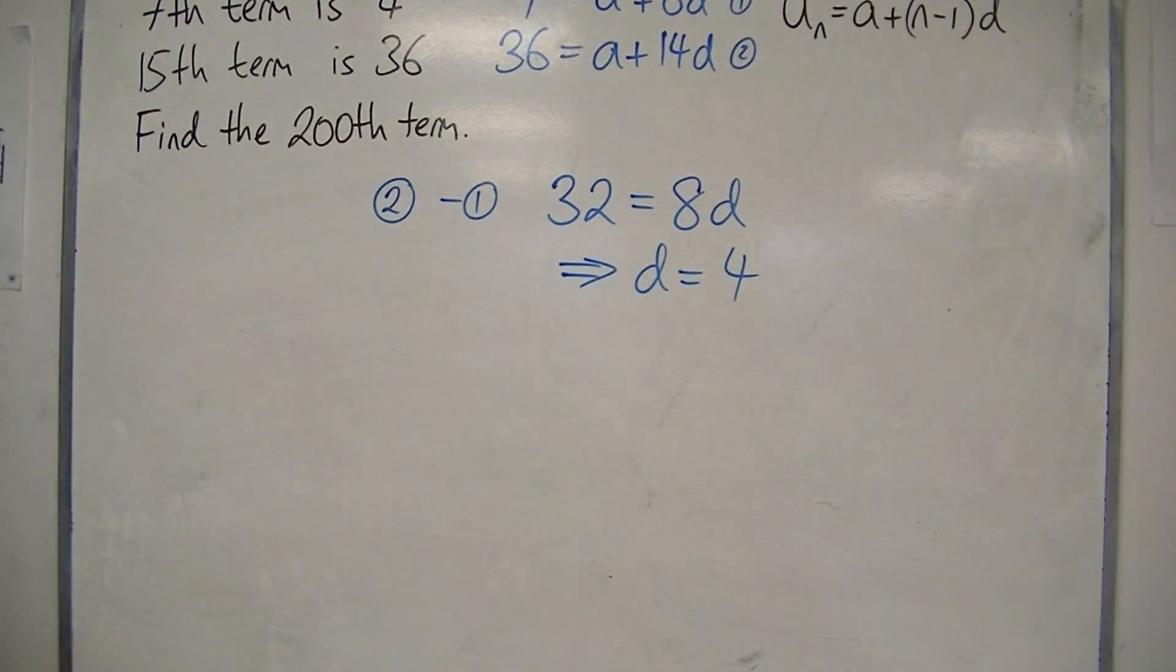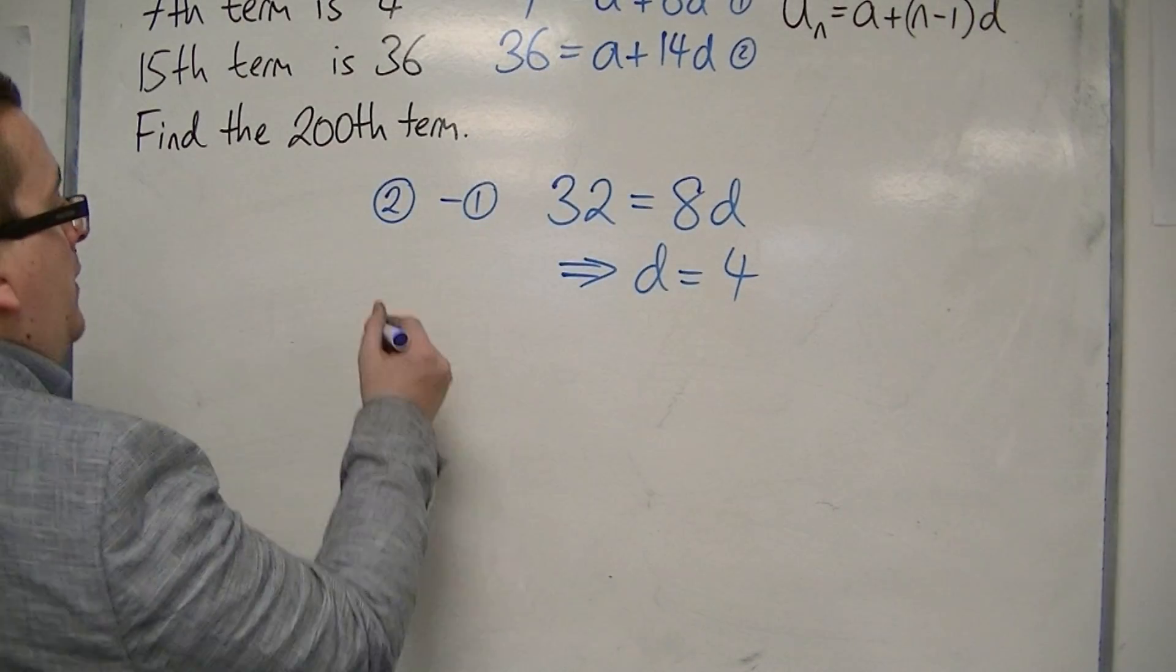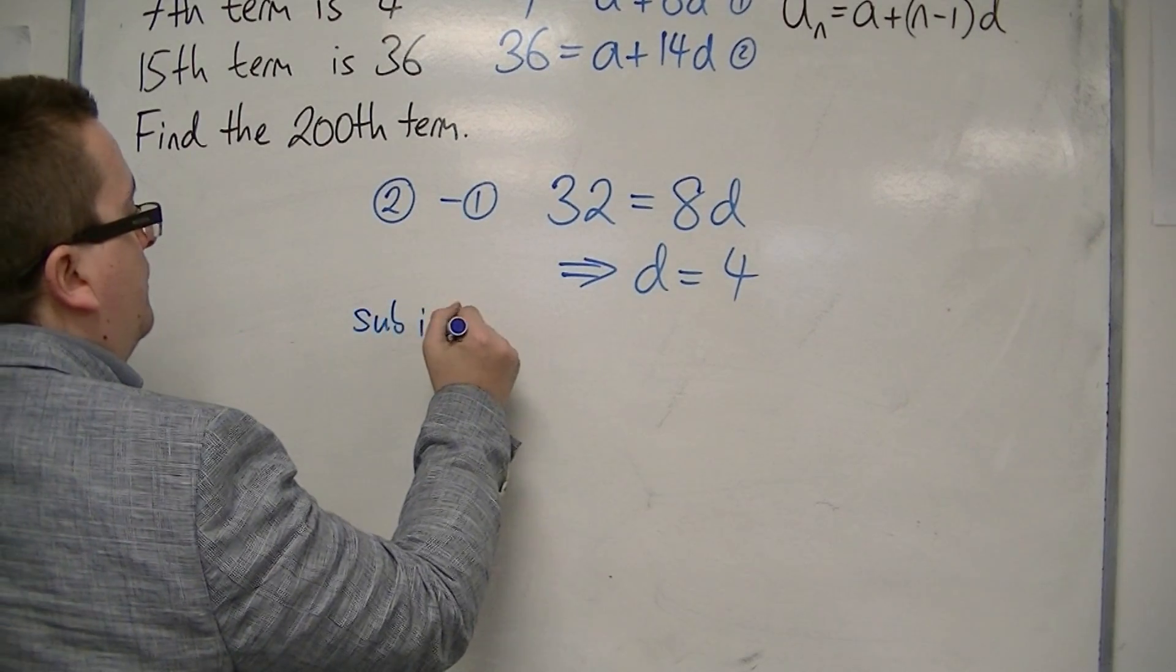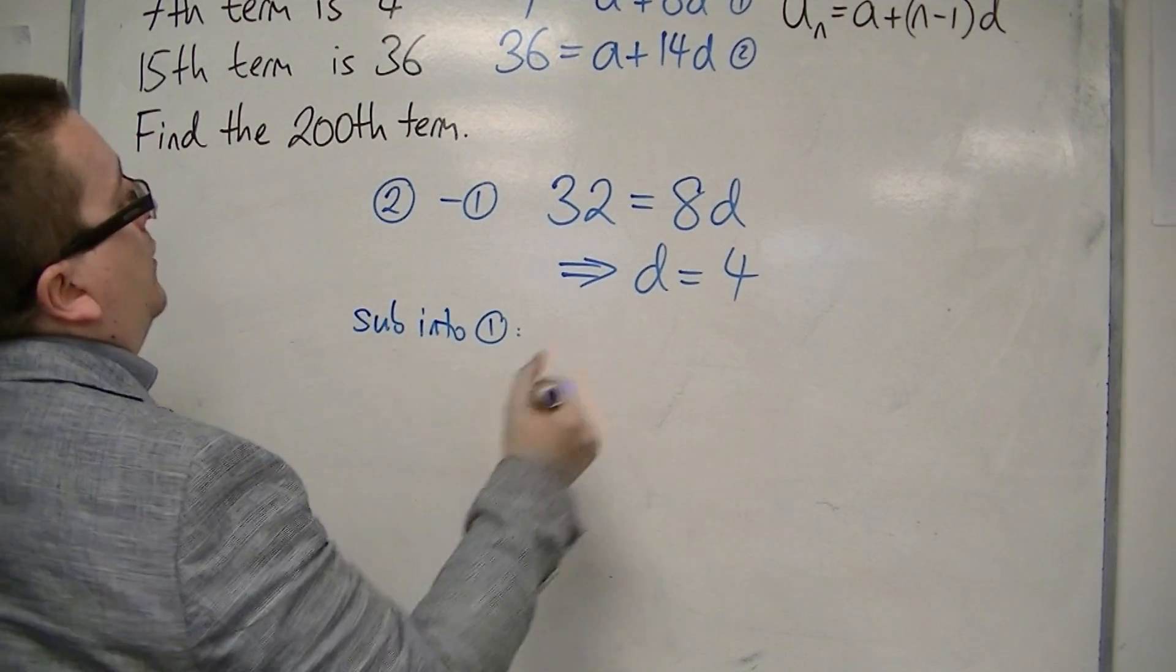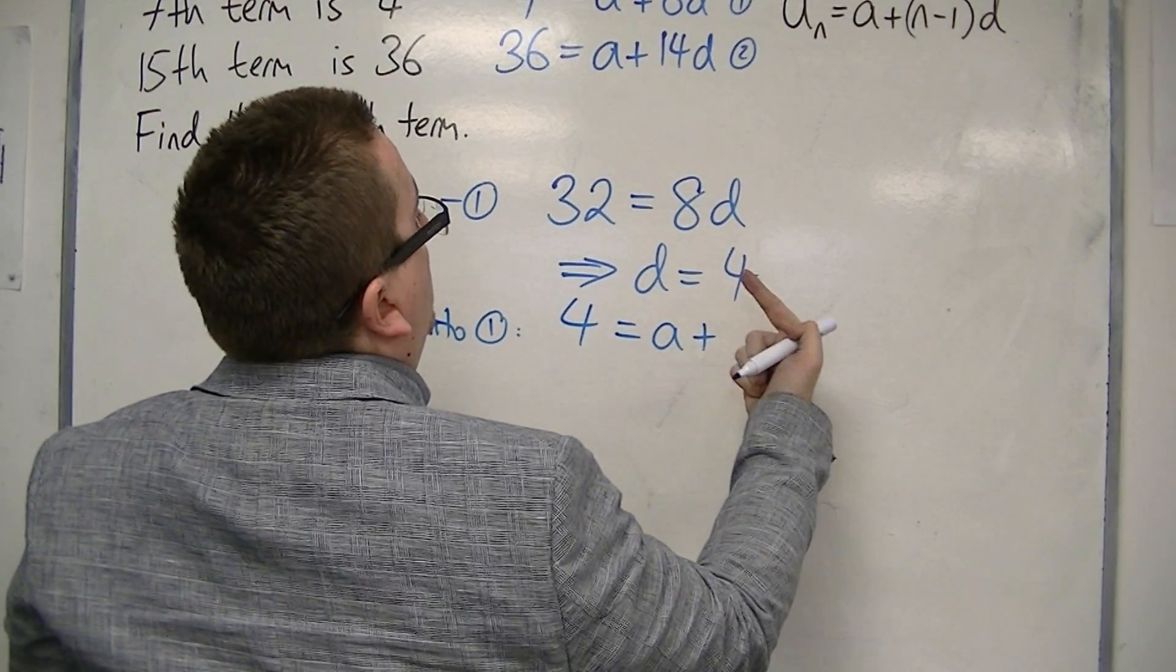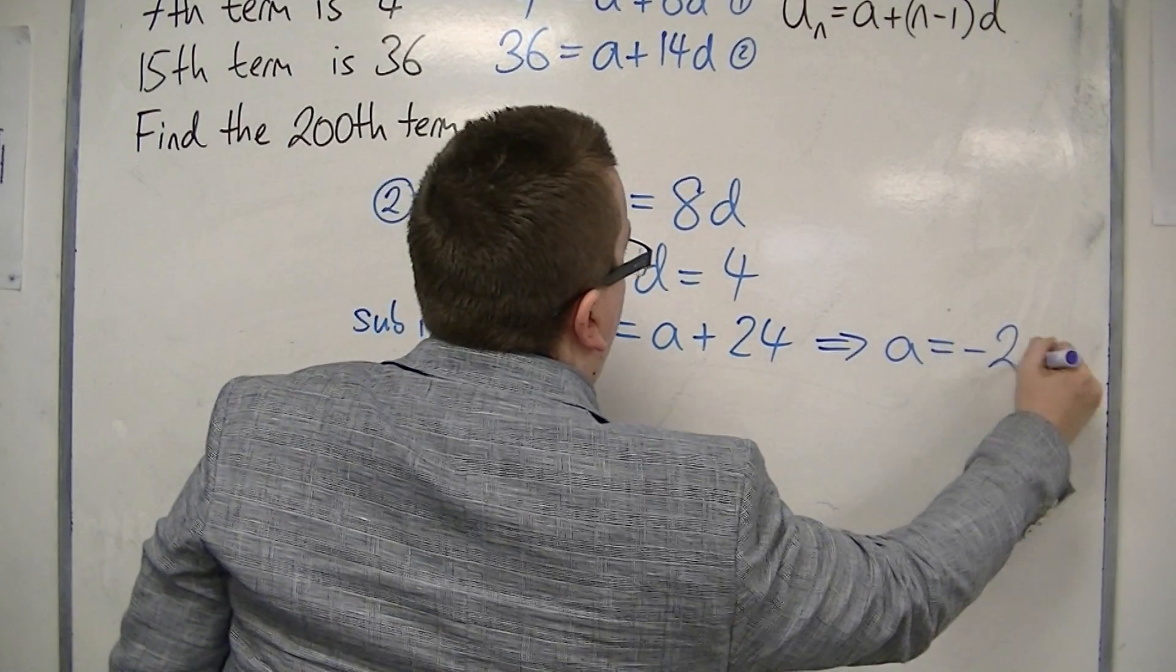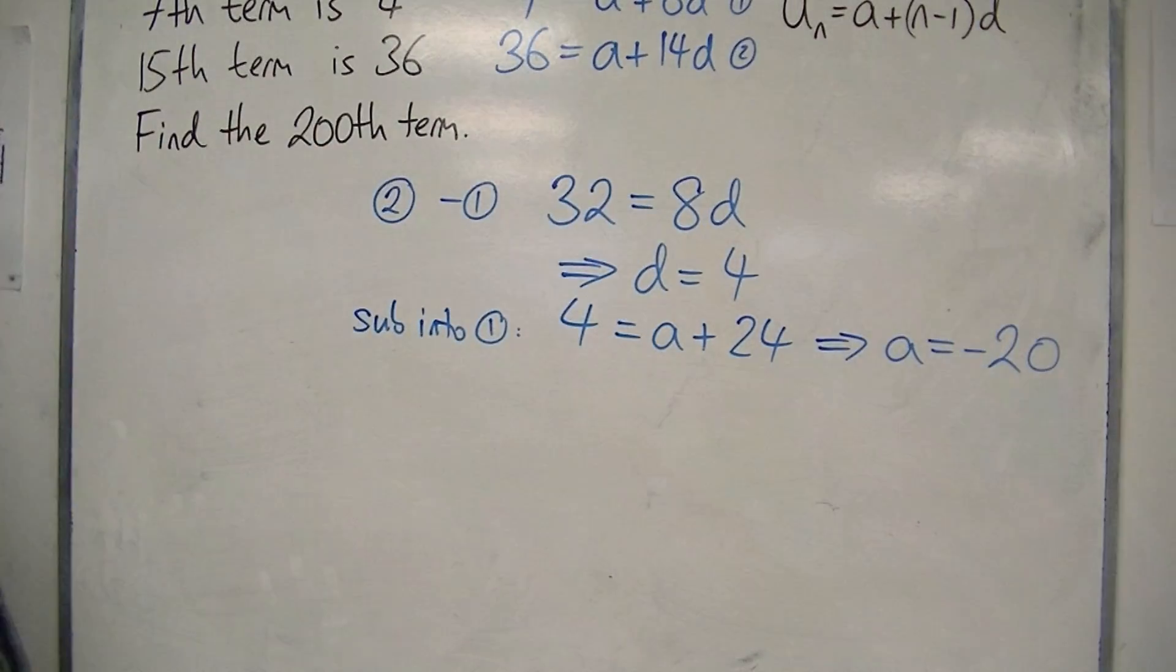4 8's are 32. Substitute D is 4 into one of the two equations, so I'm going to sub into 1. So I've got 4 is A plus 6 lots of D, so that's 24. So A must be minus 20. 4 take away 24.